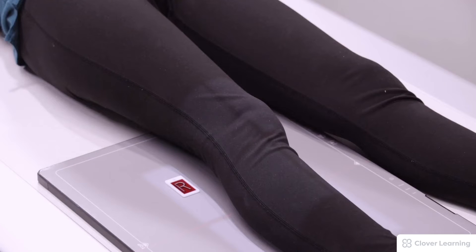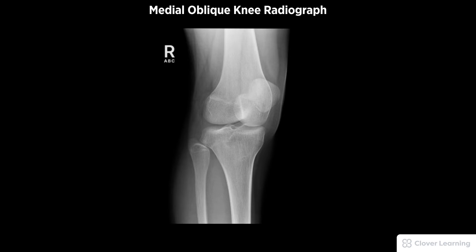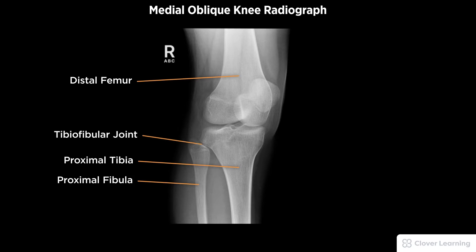The exposure is made. A diagnostic medial rotation oblique knee radiograph must be free of motion, demonstrating the oblique view of the distal femur, proximal tibia and fibula, open proximal tibial-fibular joints, and proper visualization of soft tissue and bony detail.